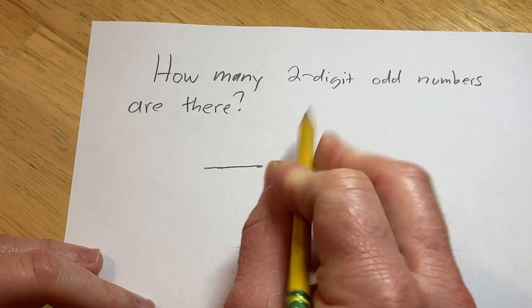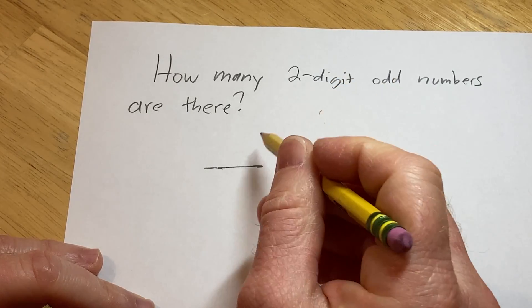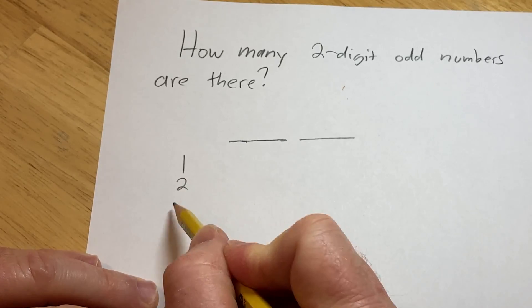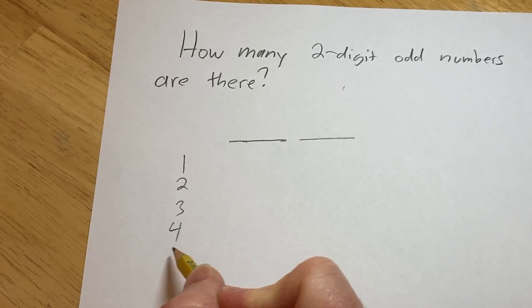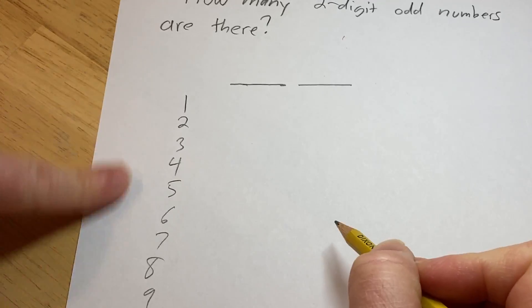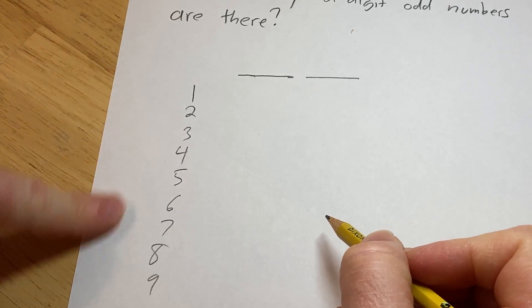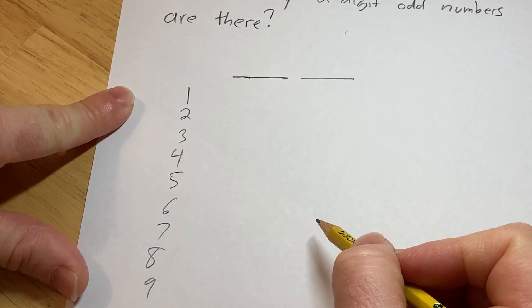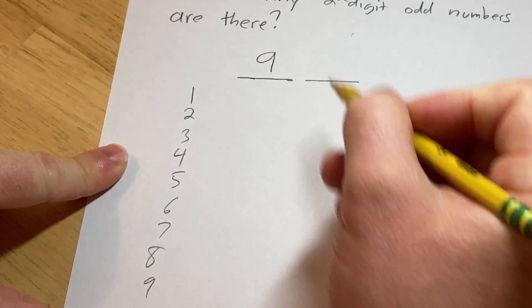If we're focusing on two-digit numbers, the first digit can be 1, 2, 3, 4, 5, 6, 7, 8, or 9. Those are the choices because we can't have 0 as the first digit. So there are 9 ways to pick the first digit.